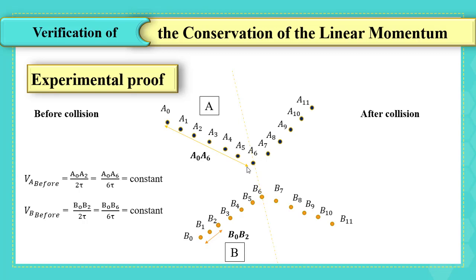After collision, the speed of A will be constant and the speed of B will be constant, confirming the motion is uniform. Knowing that the speed is constant, does it mean necessarily that the velocity is constant? Of course not.